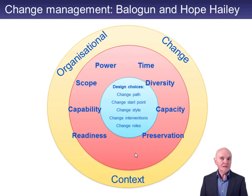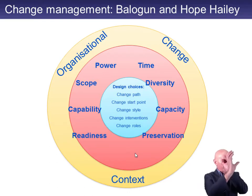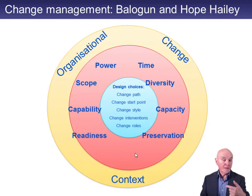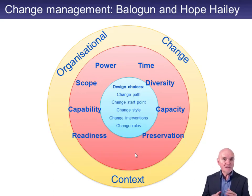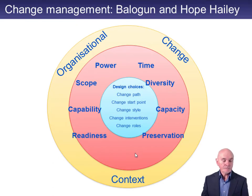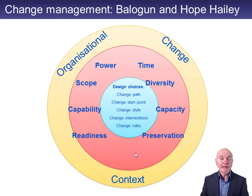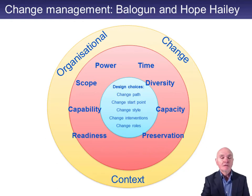It's called a kaleidoscope of change because a kaleidoscope is one of those now rather old-fashioned toys — you could look through it like a telescope, rotate the end, and you'd get symmetrical patterns. Here the idea is that as the context of change varies — those are the variables associated with the change situation — you can adopt different design choices. Rather than keeping it in a circle, we'll simply list out what's in the pink and what's in the blue.